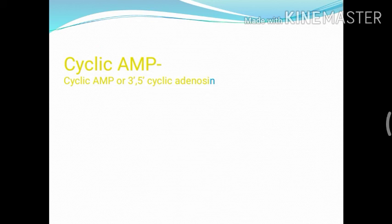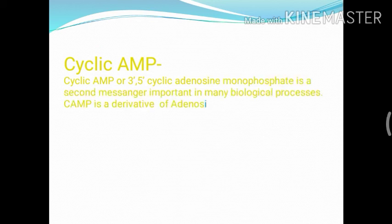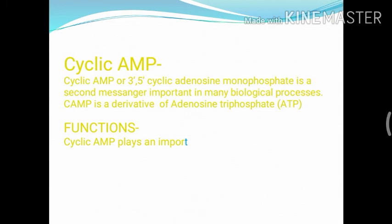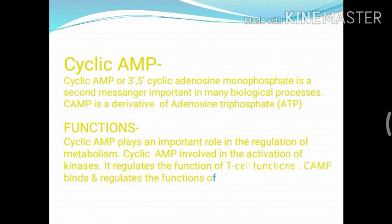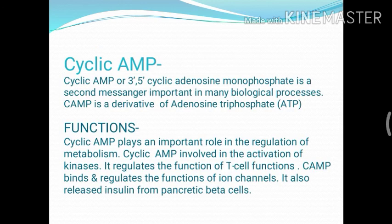Now we will move towards cyclic AMP. Cyclic AMP is also known as 3'-5' cyclic adenosine monophosphate, and it is the secondary messenger important for various biological processes. Cyclic AMP is a derivative of ATP, adenosine triphosphate.